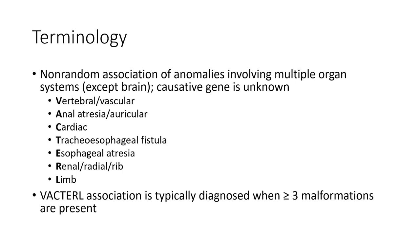V comes from vertebral or vascular. A is anal atresia or auricular. C is cardiac. T is tracheoesophageal fistula. E is esophageal atresia. R is renal, rib, and limb.